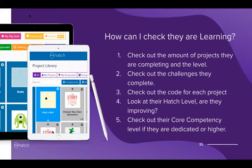To check if your child is learning, you can look at the number of projects completed and their level, check the challenges they've completed, look over the code for each project, check their Hatch level to see if they're improving, and check their core competency levels in the skills report.